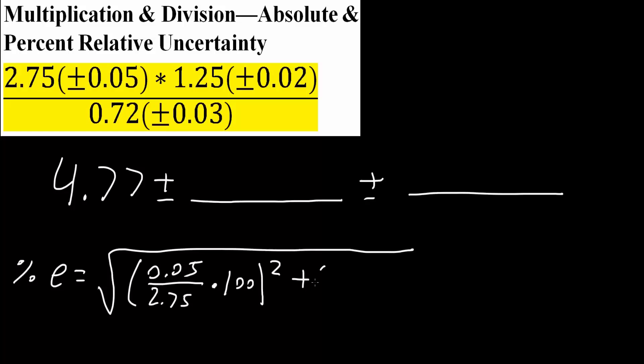Likewise, we do the same thing for the other two numbers. So we get 0.02 divided by 1.25, then multiply it by 100 and square it, plus the final one. So we get 0.03 divided by 2.72, multiply it by 100, and square it. Now what we would get here is equal to 4.82%. This is our percent relative uncertainty.